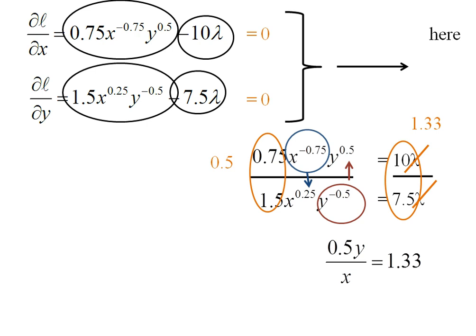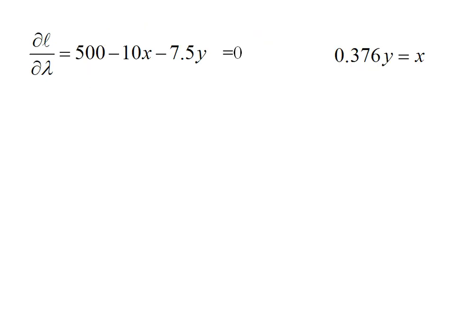All that mess with the nasty exponents always simplifies down really nicely if we start with the Cobb-Douglas functional form. I'm just going to rearrange this and solve for x. Now I have two equations and two unknowns. We'll look at solving that in the next part.